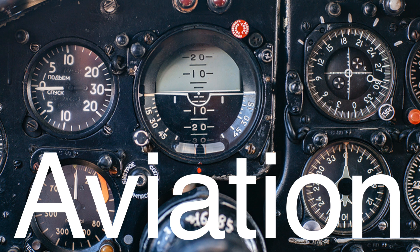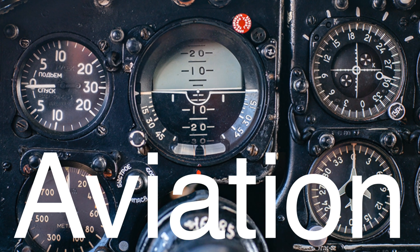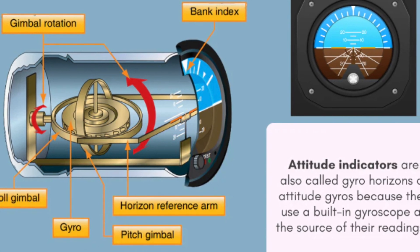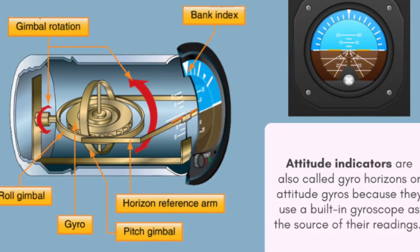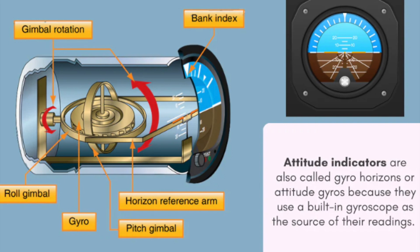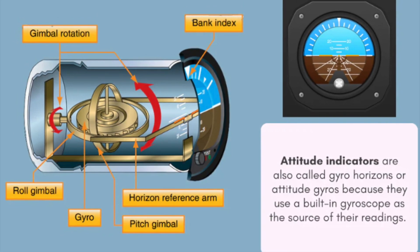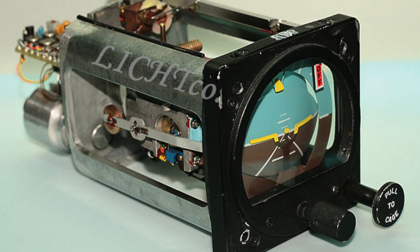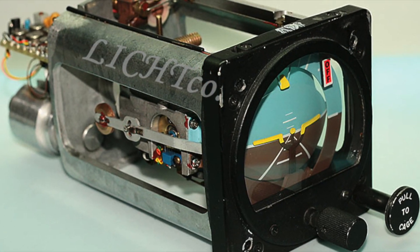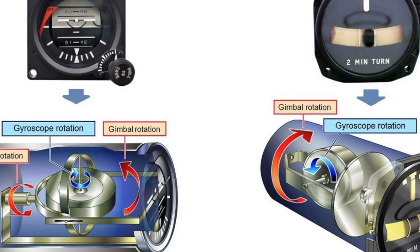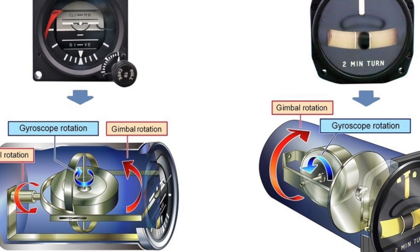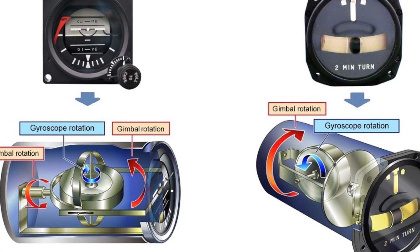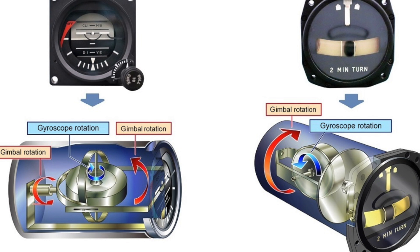Gyroscopes are crucial in aviation, where they are used in instruments like the artificial horizon. The artificial horizon, or attitude indicator, shows the aircraft's orientation relative to the Earth's horizon. It helps pilots maintain level flight, indicating whether the aircraft is climbing, descending, or banking. This is achieved through a set of gyroscopes that sense the pitch and roll of the aircraft. Because gyroscopes can maintain a fixed orientation in space, they provide a reliable reference for the plane's attitude, even in poor visibility conditions where visual cues are absent.